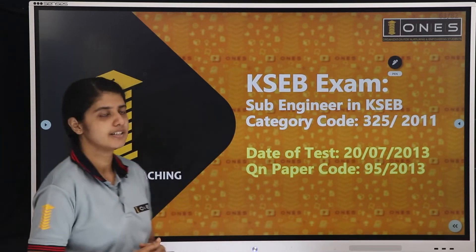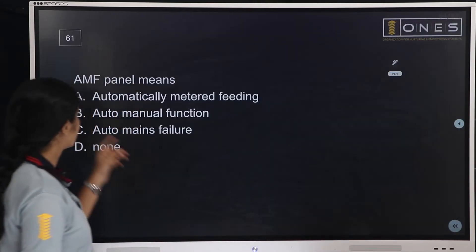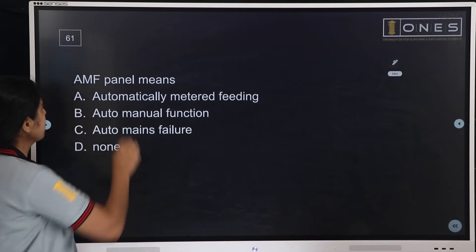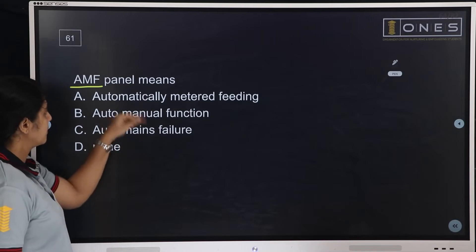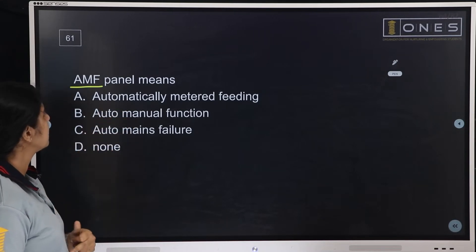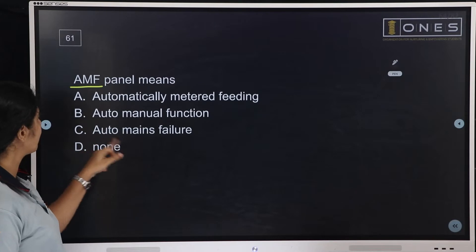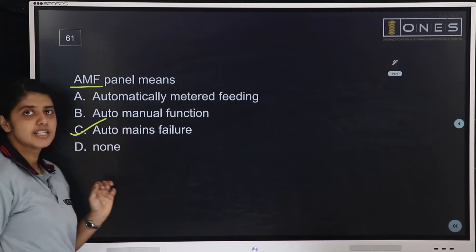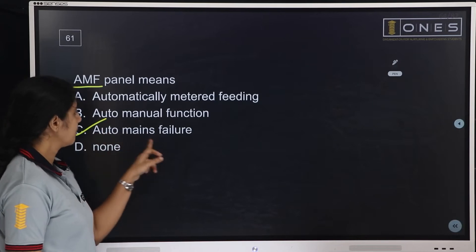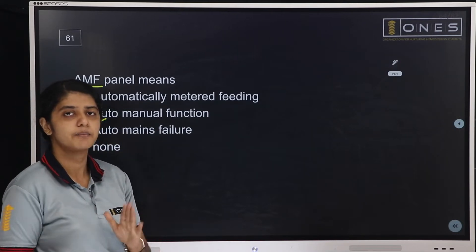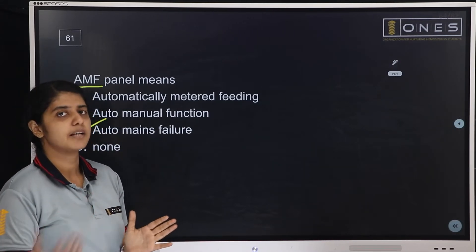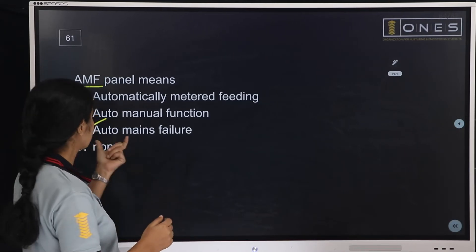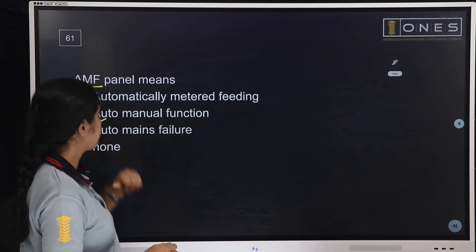Part 4, first question: AMF panel means? Options are: Automatically Metered Feeding, Auto Manual Function, Auto Means Failure, or None. The answer is not option C — Auto Means Failure. When you have a power failure, you can use a standby generator. You can use an automatic transfer switch connected to the AMF panel.